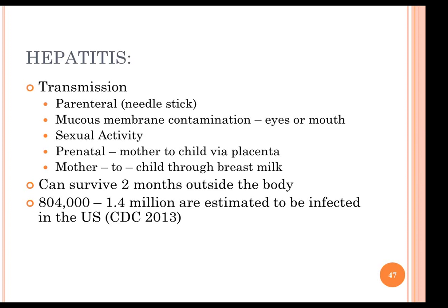Hepatitis is more contagious than HIV. Sexual activity is also a route of transmission, as is prenatal — a mother can pass it to her child via the placenta or via breast milk. The hepatitis virus is quite strong and can survive probably up to two months outside of the body. So if there is dried blood on a counter that has been exposed to hepatitis, one can catch it from exposure to that dried blood.